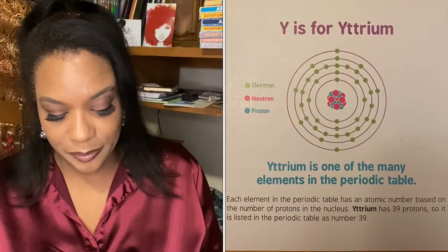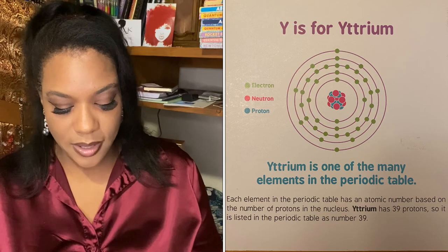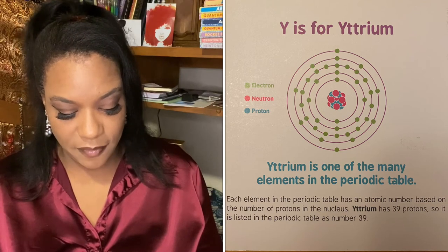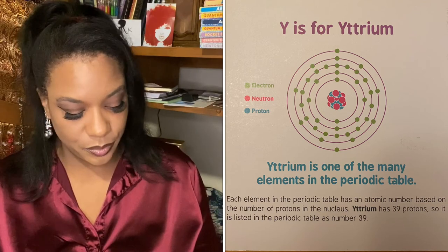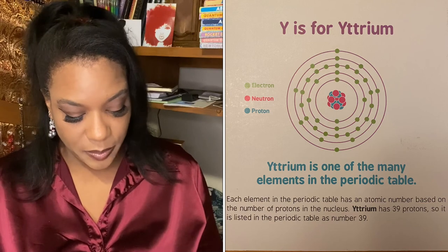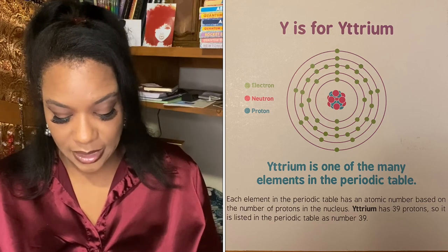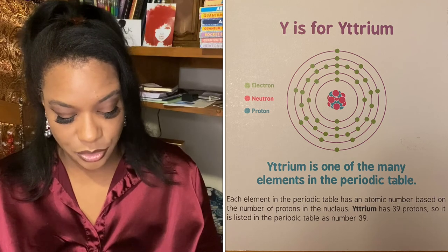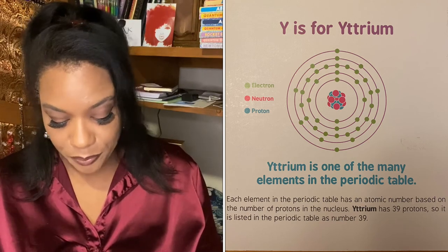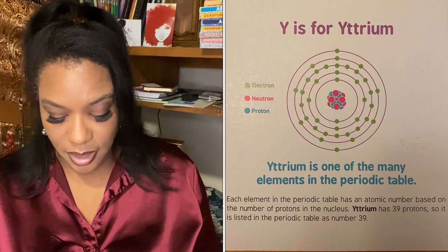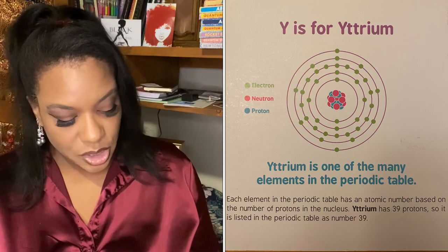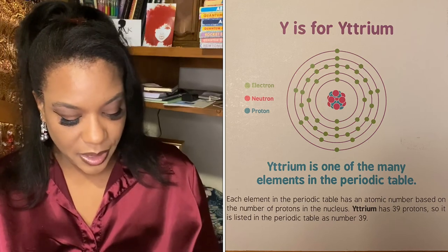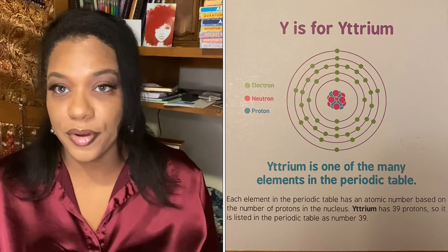Y is for yttrium. Yttrium is one of the many elements of the periodic table. Each element in the periodic table has an atomic number based on the number of protons in the nucleus. Yttrium has 39 protons, so it is listed in the periodic table as number 39.